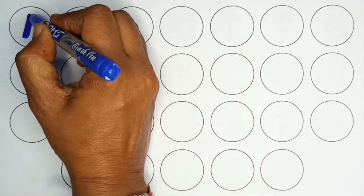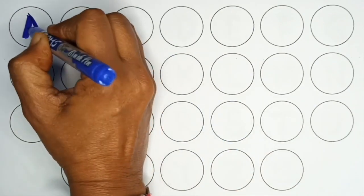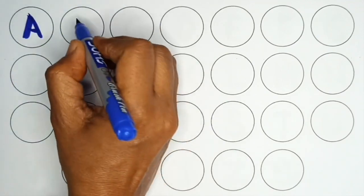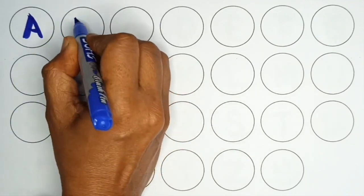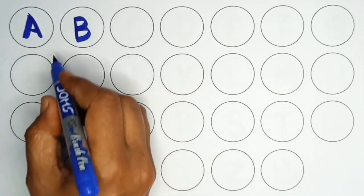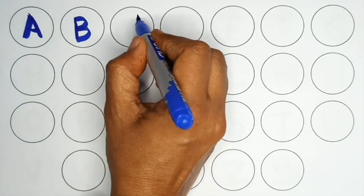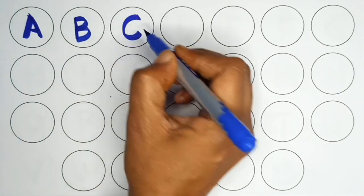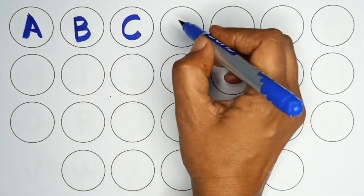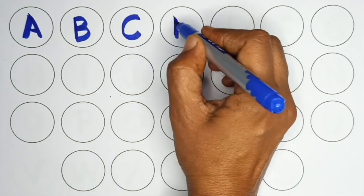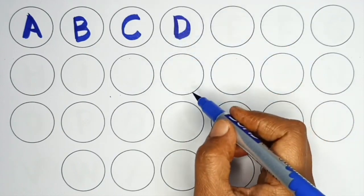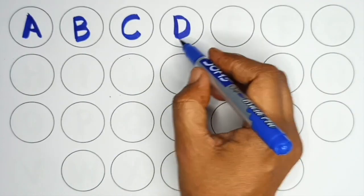A, A for apple. B, B for ball. C, C for cat. D, D for dog.